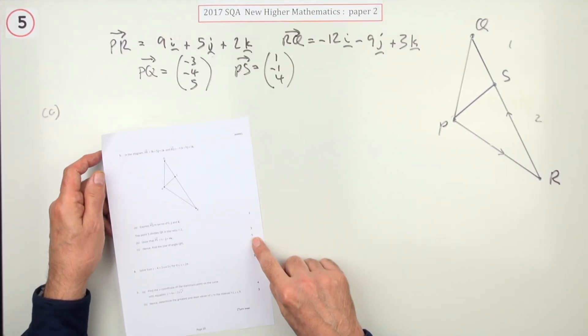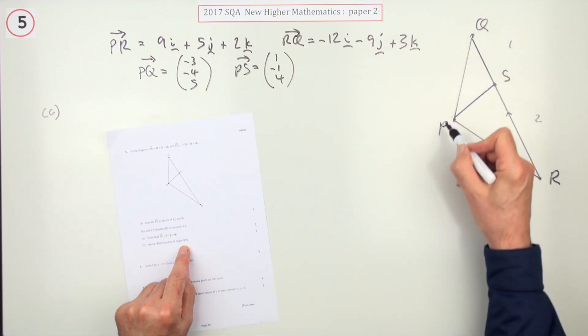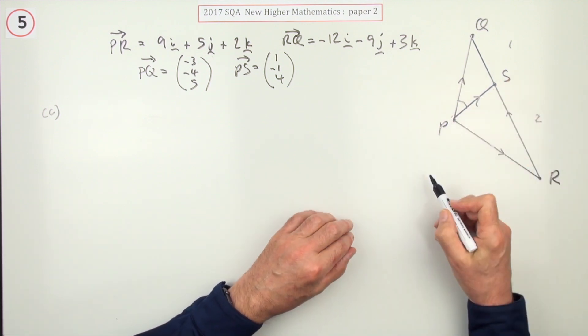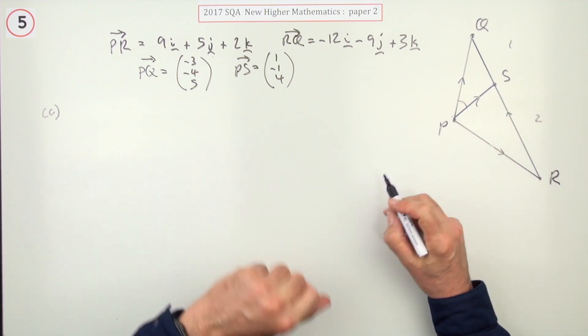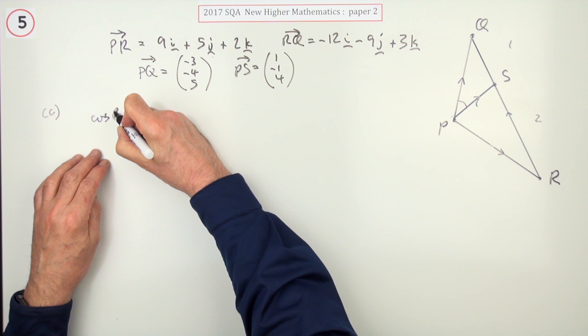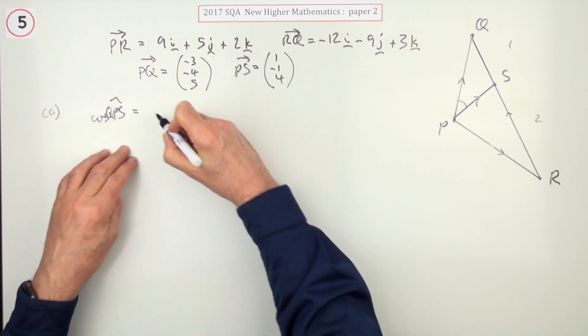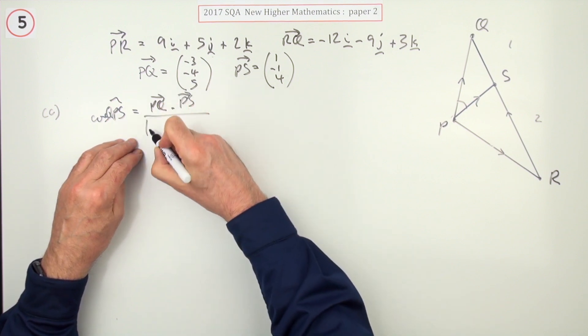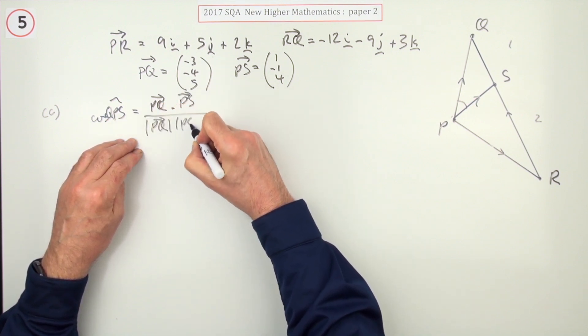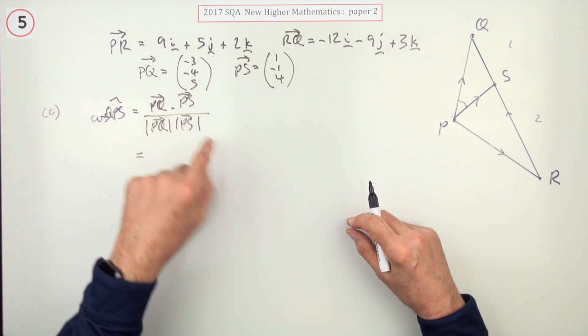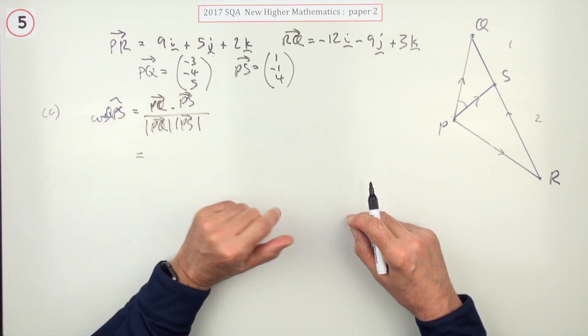So in part C, for five marks, what's the size of angle QPS, this angle in here? If you want to find this angle using vectors and the scalar product, you'll need the vectors that radiate away, so you'll need PQ and you need PS. That's exactly what you've got, so you can just launch into it. Cos QPS will be PQ dot PS, the scalar product, over the magnitude of PQ times the magnitude of PS. So I need to work out these three things, and there's probably a mark for each of those.